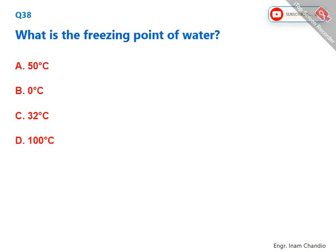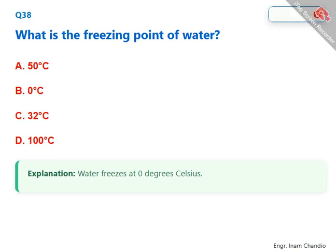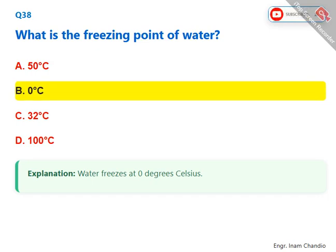What is the freezing point of water? Water freezes at 0 degrees Celsius. The correct answer is B. 0 degrees Celsius.